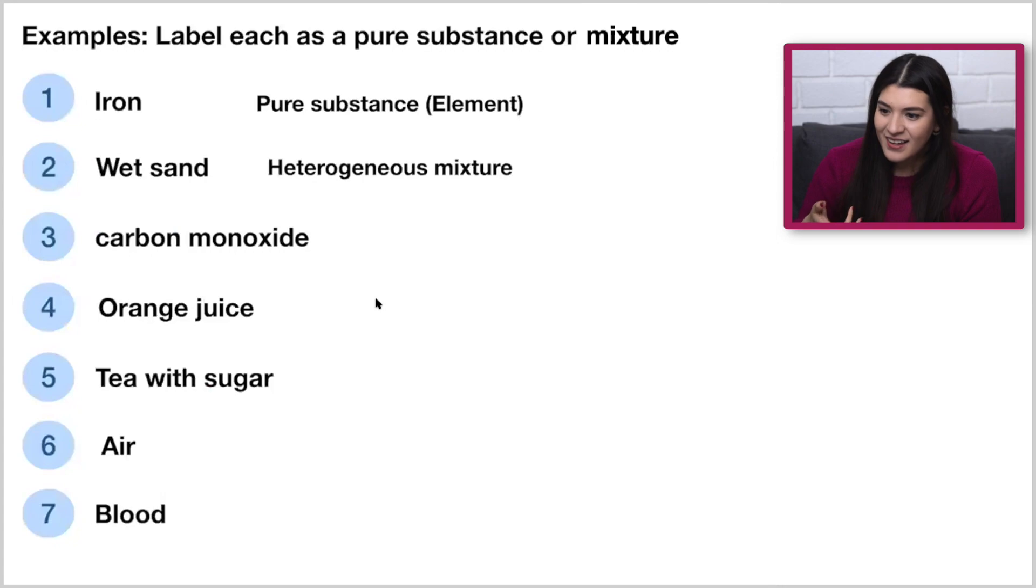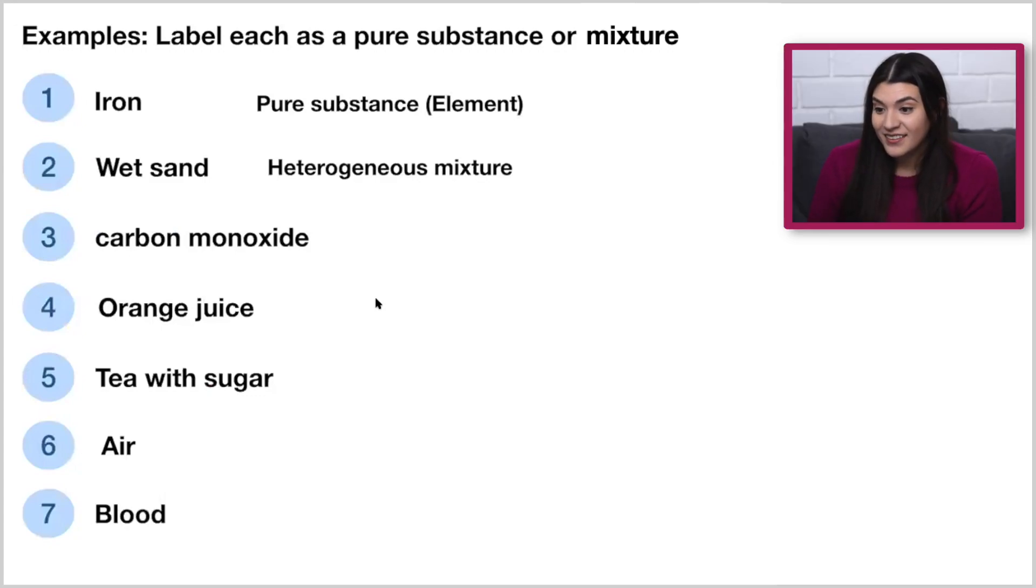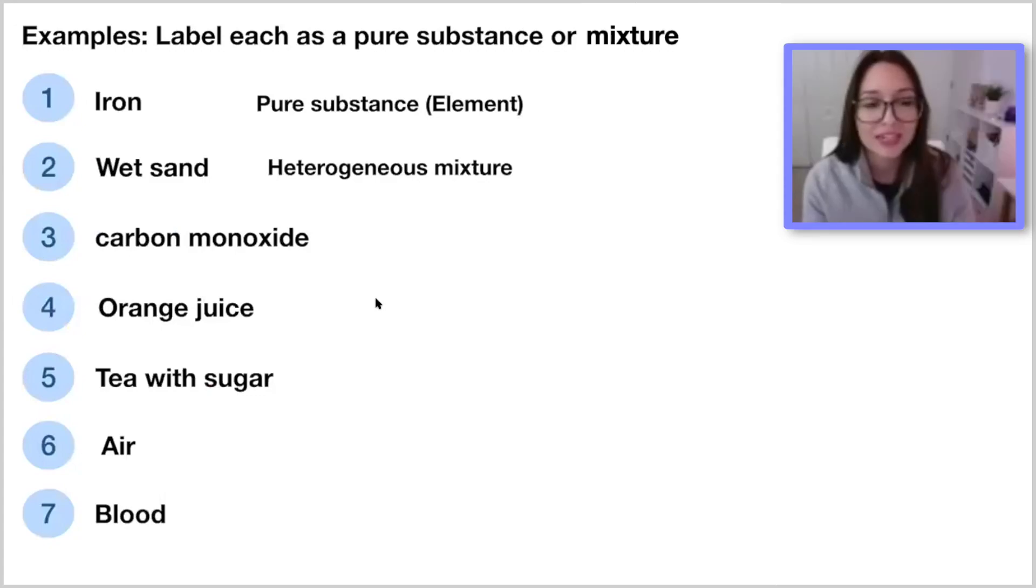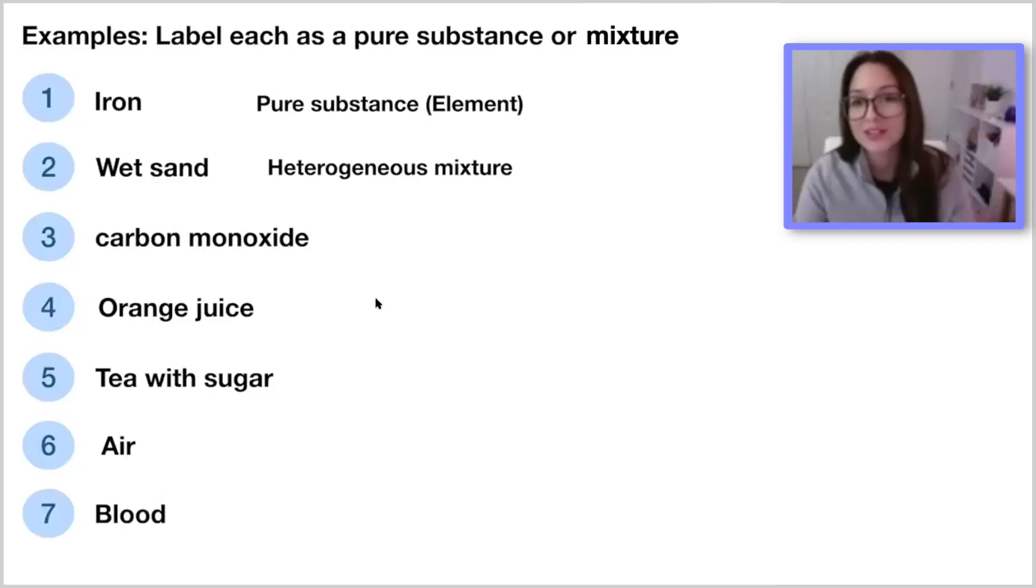Since it told you that it is wet sand, that description is going to help you so much, and you're actually going to see that a lot with these types of questions. When they give you some sort of adjective or something that's actually describing the sand or describing something, that's kind of your hint of whether or not it's homogeneous or heterogeneous. So if it was just regular sand, then would it be homogeneous? It could have been, yes. Okay. Carbon monoxide would be a compound? It is, yeah. And that's a type of pure substance. Perfect.